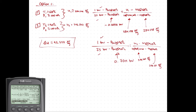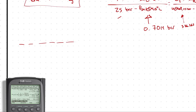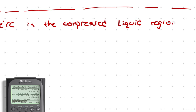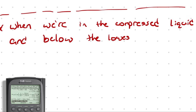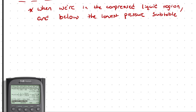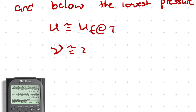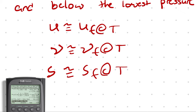Since we're already approximating by assuming a pressure and using linear interpolation, it might be acceptable to assume a little bit more error to get a result that's close enough. The first approximation method is: when we're in the compressed liquid region and below the lowest pressure subtable, we can probably assume that our properties are basically the same as the saturated liquid property at that temperature — essentially neglecting the effects of pressure within the compressed liquid region close to the saturated liquid line.